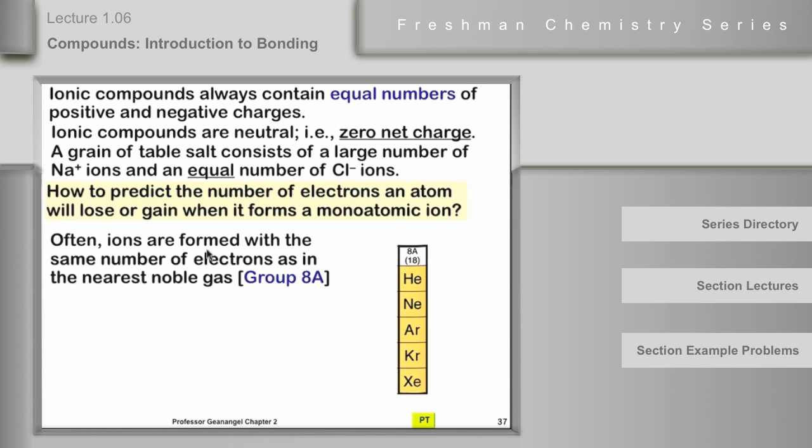Without saying why, I just want to tell you that frequently main group metal and nonmetal ions form with the same number of electrons as the nearest noble gas. Here are the noble gases from the column 8A in the periodic table, family if you wish: helium, neon, argon, krypton, and xenon. And what I'm saying here is that if you look at where an element is, a main group element, with respect to group 8A, you can predict how many positive or negative charges it forms.